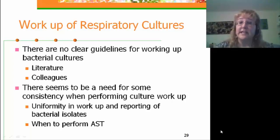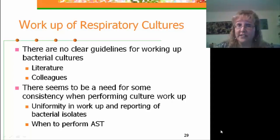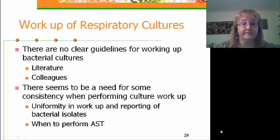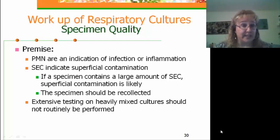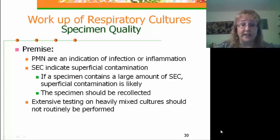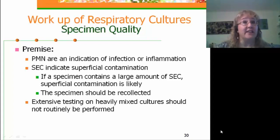Consistency gives us uniformity in our workup and reporting of bacterial isolates, as well as uniformity in which isolates have susceptibility testing performed. A few premises: polymorphonuclear neutrophils are an indication of infection or inflammation, and squamous epithelial cells indicate superficial contamination. If a specimen contains a large number of squamous epithelial cells, superficial contamination is very likely and most of the time the specimen should be recollected. If it can't be, we don't want to perform extensive testing on heavily mixed cultures because of their potential for producing misleading information.